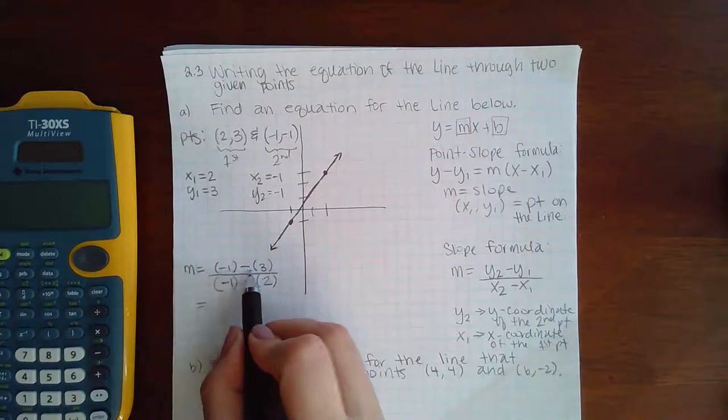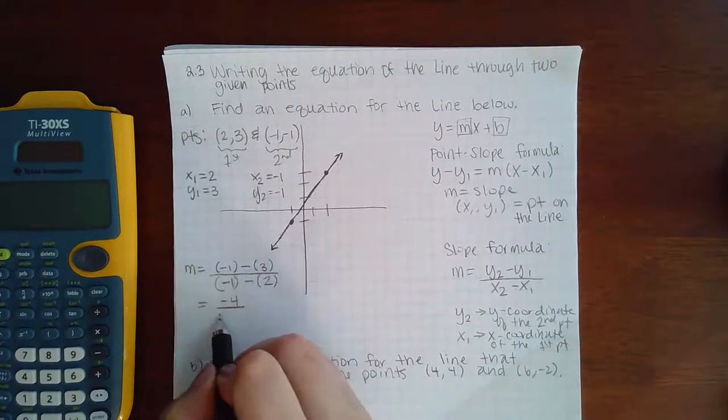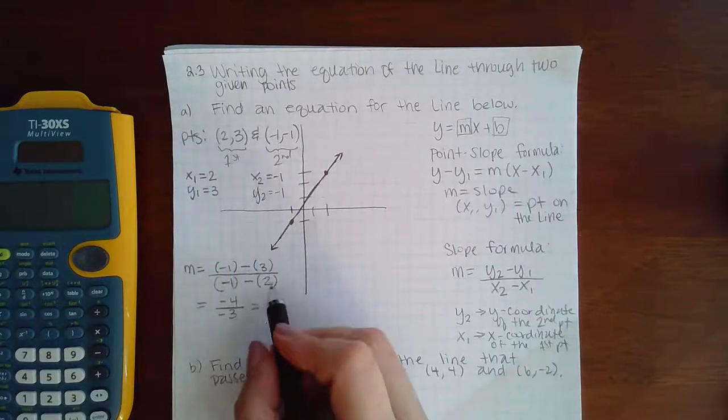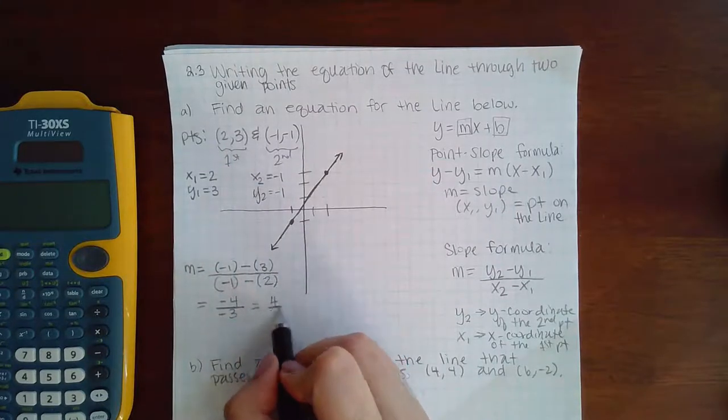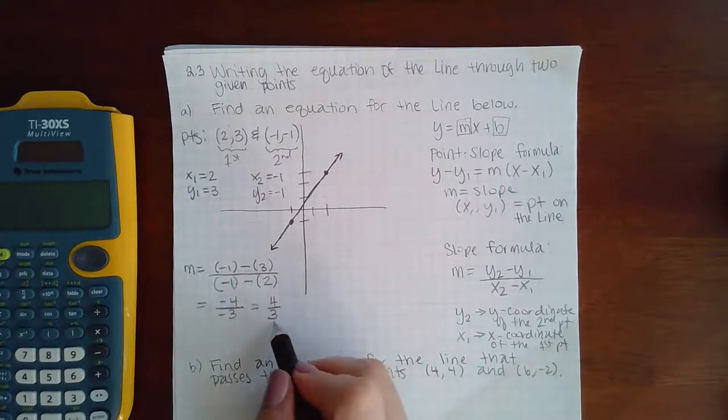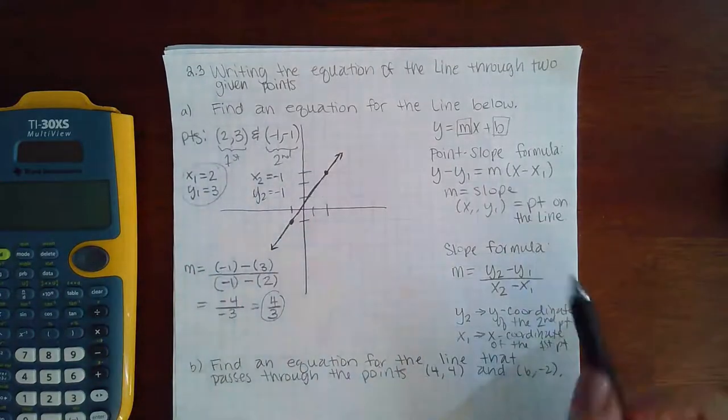And then if I simplify that, negative 1 minus 3 is negative 4, negative 1 minus 2 is negative 3, and those negatives can reduce, leaving me with 4 thirds.